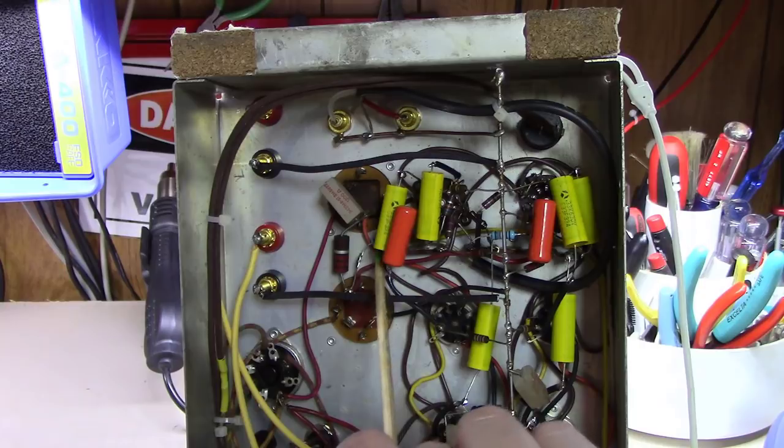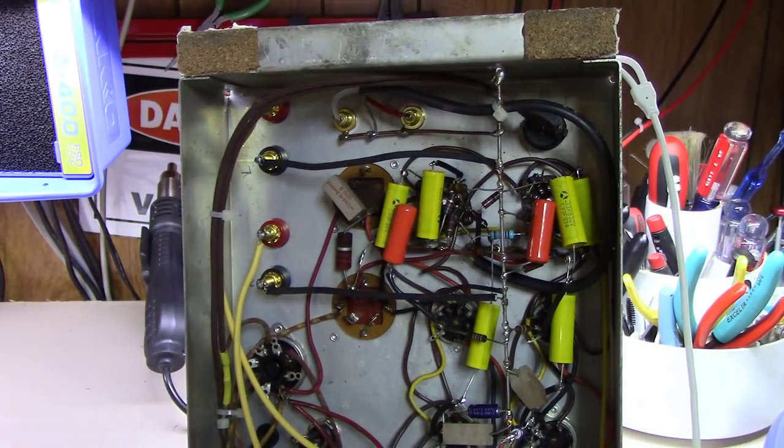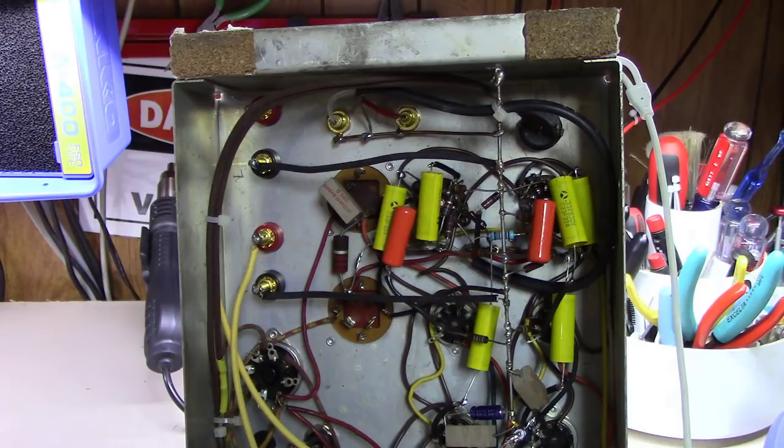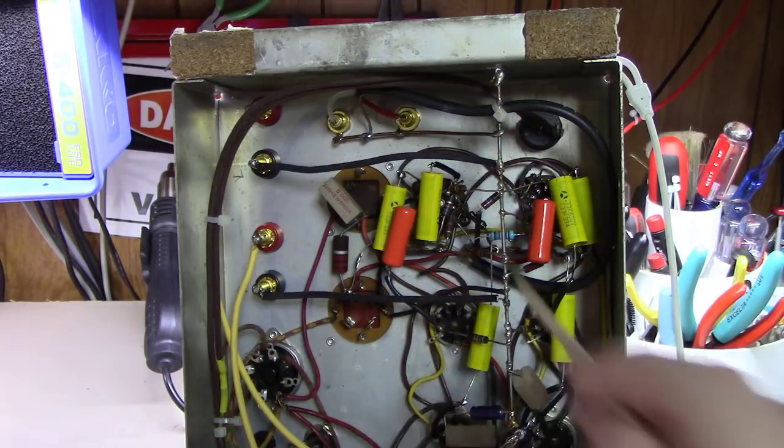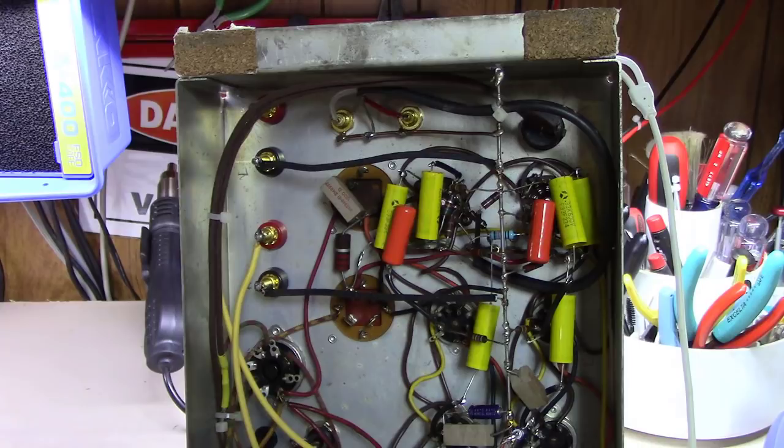You can see up here on the actual 12AX7s here, and over here where I actually have the 100K plate load resistors and everything else here, the 0.33 microfarad coupling caps all throughout this were done in the first modification. So it wasn't too bad of a job—two new tubes, six resistors, and a little bit of cleanup on the wiring and whatnot.